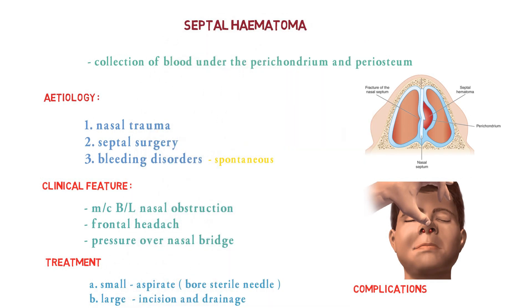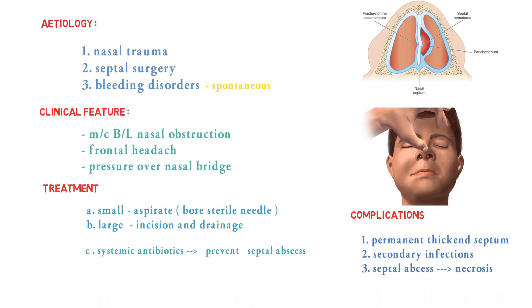To revise: septal hematoma is a collection of blood under the perichondrium and periosteum. The commonest presenting symptom is bilateral nasal obstruction, along with frontal headache or pressure over the nasal bridge. Treatment involves aspiration for small hematomas or incision and drainage for large ones, followed by systemic antibiotics. Complications include secondary infection, septal abscess, and permanent thickening of the septum.